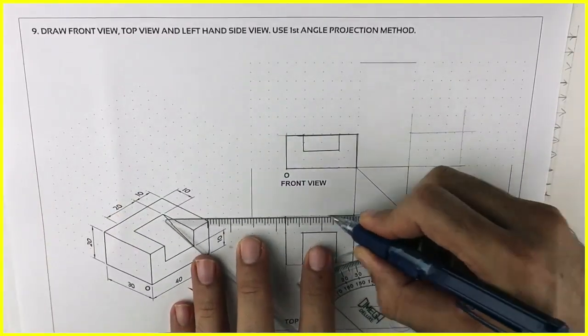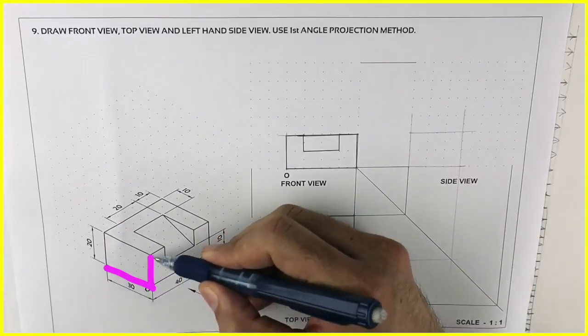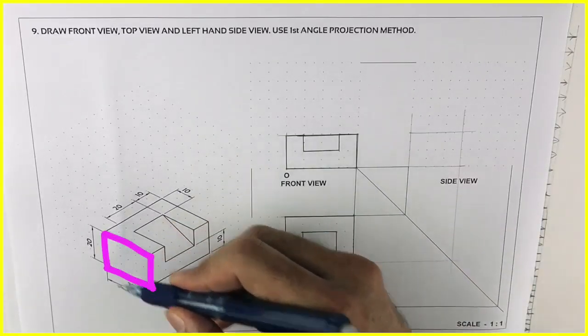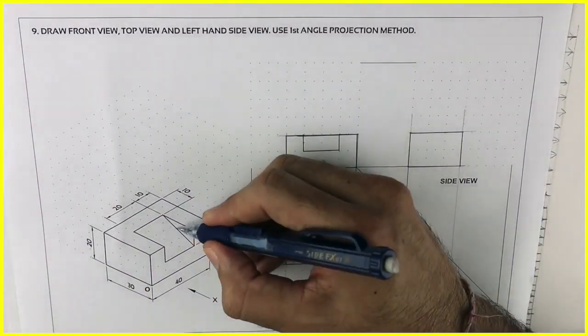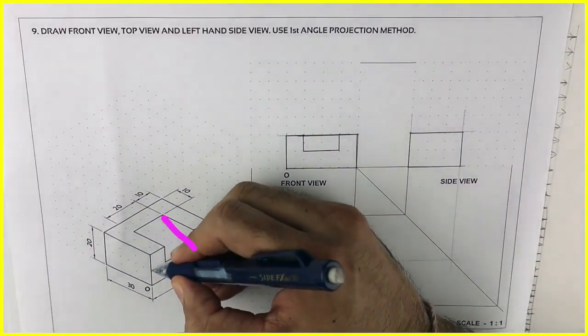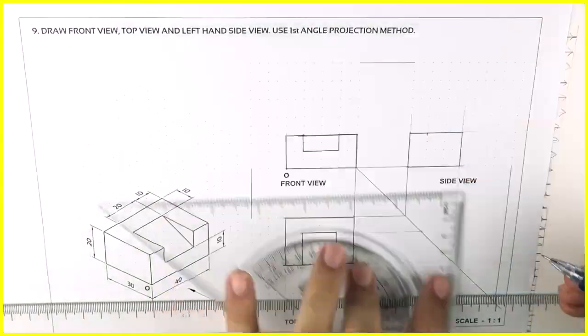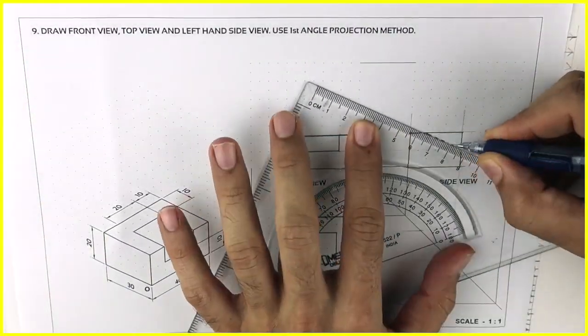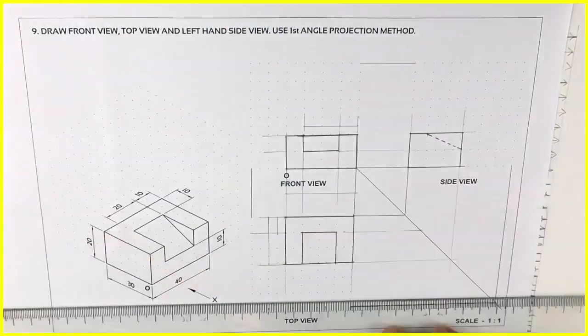We'll mark distance. Now for side view we can see a rectangle, so we'll draw rectangle. Now this is important, this line you can't see from the side, right from here. So that we need to draw dotted. Then you can do dimensioning. Thank you.